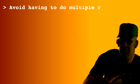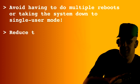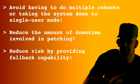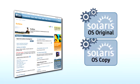Using Solaris Live Upgrade simplifies the Solaris 10 patching process in three important ways. First, with Solaris Live Upgrade you avoid having to do multiple reboots or taking the system down to single-user mode. Second, using Solaris Live Upgrade reduces the amount of downtime involved in patching. And third, Solaris Live Upgrade reduces risk by providing fallback capability. With Solaris Live Upgrade you create an identical copy of the running OS.